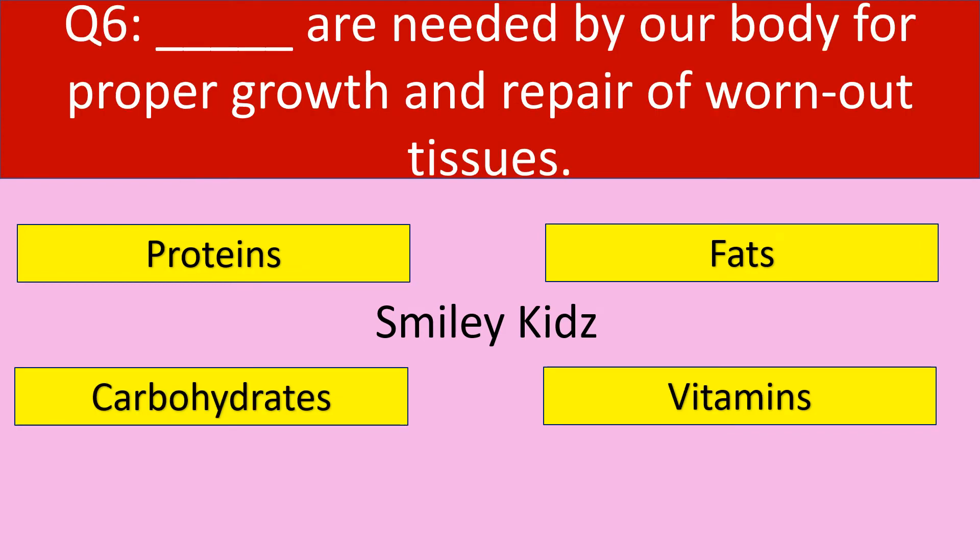Question number 6. Dashes are needed by our body for proper growth and repair of bones and tissues. Options are: proteins, fats, carbohydrates, vitamins. Your time starts now.